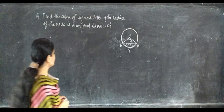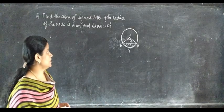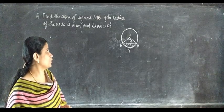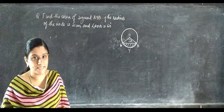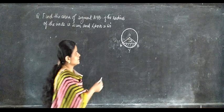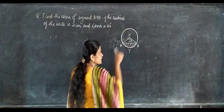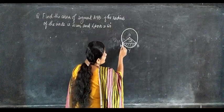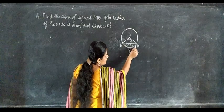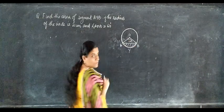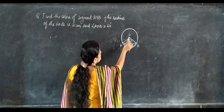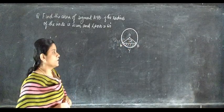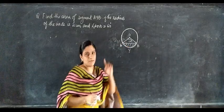Next question: find the area of segment AYB if the radius of the circle is 21 centimeters and angle AYB equals 120 degrees. Here we have theta equal to 120 degrees.